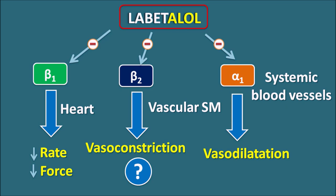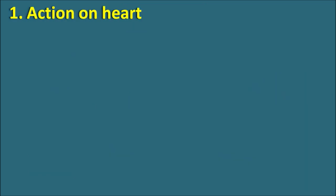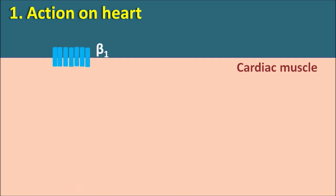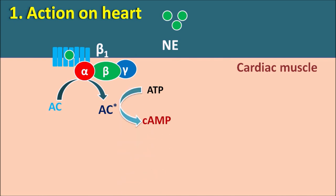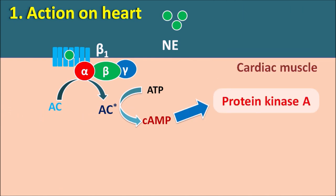Let us see the action on the heart. Beta-1 receptors on cardiac muscle are G-protein coupled receptors connected with three subunits: alpha, beta, and gamma. These beta-1 receptors work through the stimulatory alpha subunit, coupled with an increase in cyclic AMP. When norepinephrine binds to beta-1 receptors, the alpha subunit activates adenylyl cyclase, which converts ATP into cyclic AMP. Cyclic AMP acts as an important secondary messenger within cardiac muscle, stimulating protein kinase A — a family of phosphorylating enzymes that increase intracellular calcium levels.